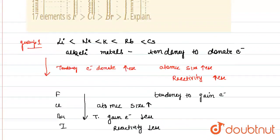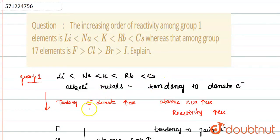So, what we did in this question: alkali metals are those metals which have tendency to donate electron. As we move down the group, their atomic size goes on increasing. That's why their reactivity increases.